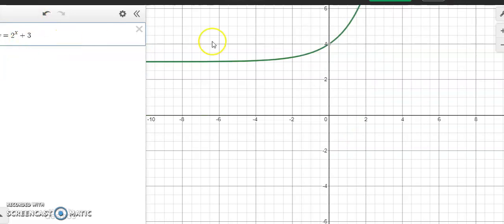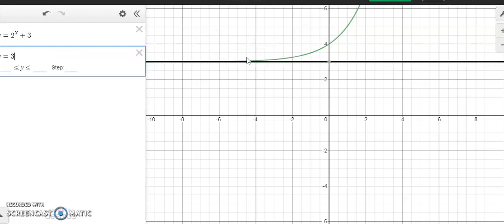If I change it to plus 3, notice once again, same shape, but the graph has moved up. So now I'm looking at another vertical shift in the positive direction.